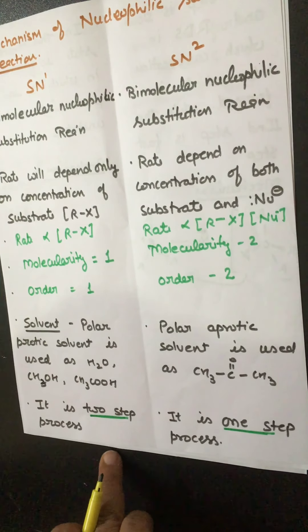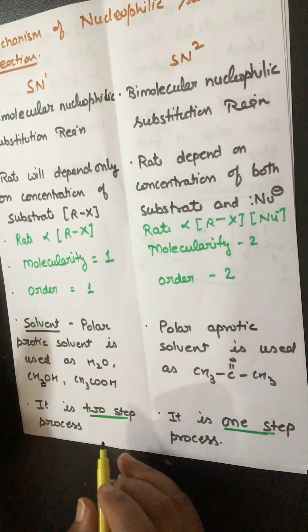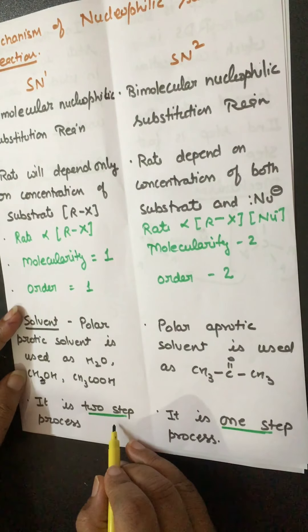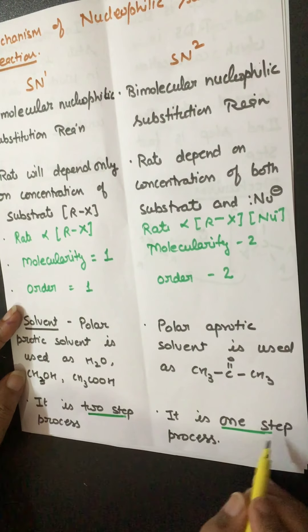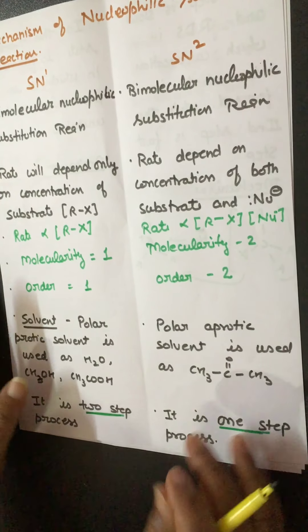SN1 type of mechanism is a 2-step process, while SN2 type of mechanism is only a 1-step process.